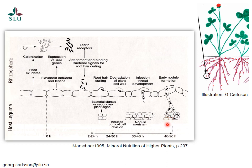As the cells inside the plant root divide more and more actively, they will soon start to make a new organ which expands. It is attached to the root but expands out from it, and after some days or weeks becomes visible as nodules — new organs attached to the roots.